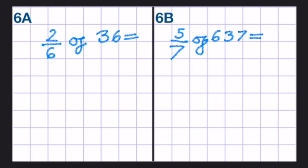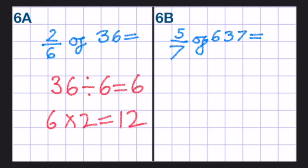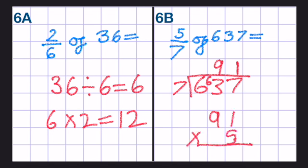Okay, you now have to find fractions of both these numbers. Press pause then we'll do it together. Okay, so we divide by the denominator times by the numerator. 36 divided by 6 is 6. And then 6 times 2 is 12. 637 divided by 7. 7 goes into 6 0 times. Carry the 6. 7 goes into 63 nine times. No remainder. 7 goes into 7 one time. So 91. And now we times it by 5. 5 times 1 is 5. 9 times 5 is 45. So it's 455.